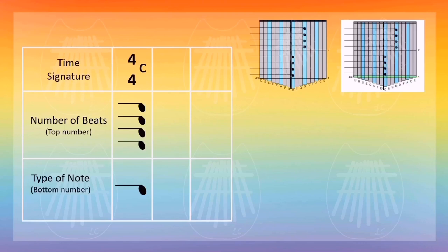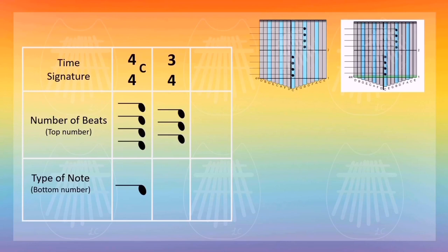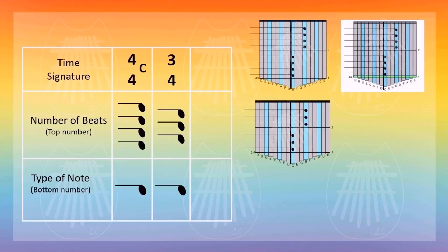Let's go over 2 more time signatures. This one is 3/4. The top number means the number of beats, so it would be 3 beats. The bottom number is 4, which you can think of as 1 over 4 — that's a quarter note. So you would use a quarter note with 3 beats per bar.